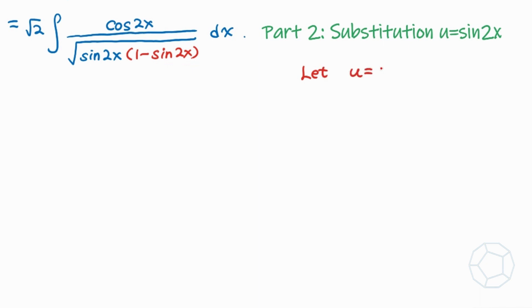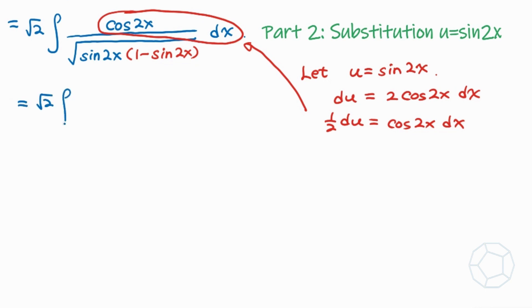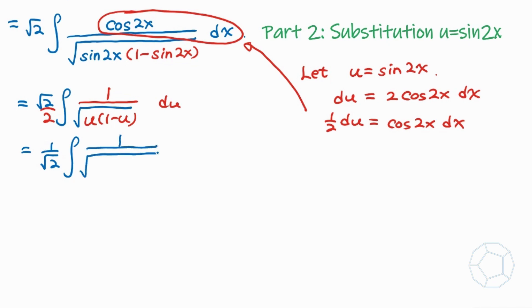In Part 2, we use the substitution u equals sine 2x to change the integral from x to u. Differentiating both sides, du equals cosine 2x times 2 dx, which means cosine 2x dx equals one-half du. Substituting into the original integral, we now have one over the square root of sine 2x integrated with one-half du, and the denominator becomes u times (1 minus u).